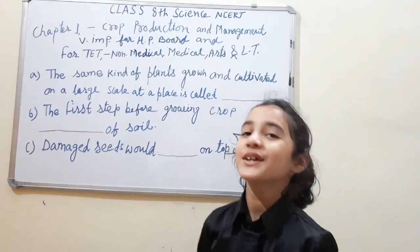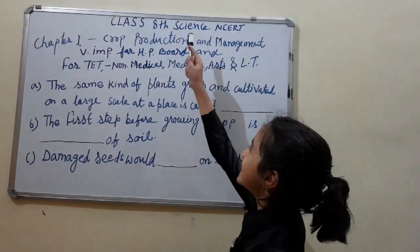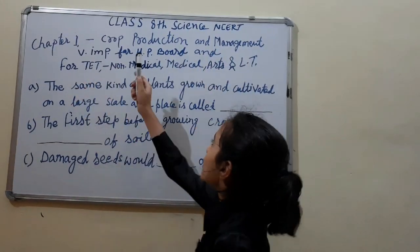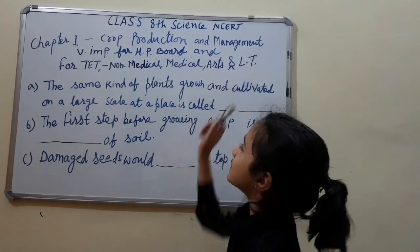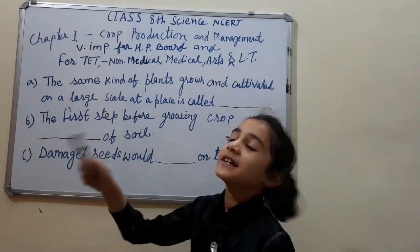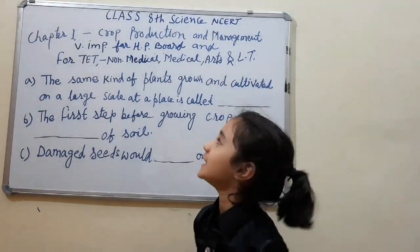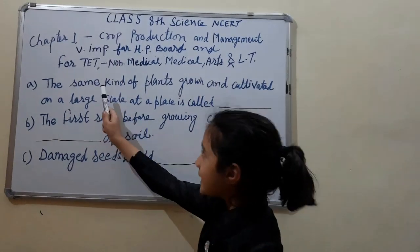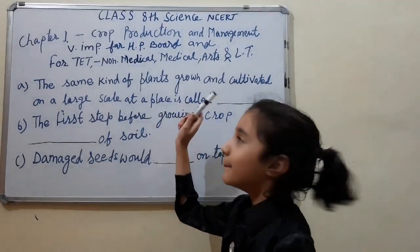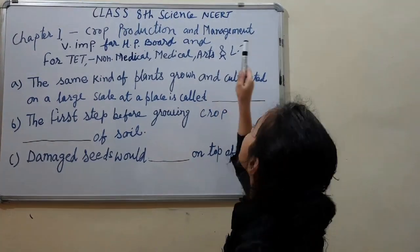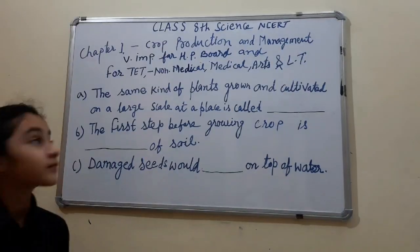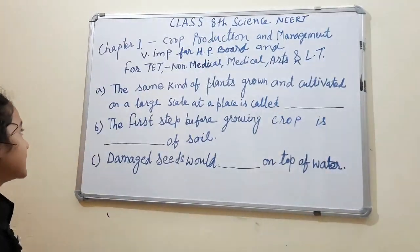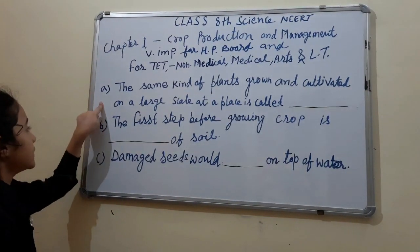Hello friends, today we are going to do Class 8 NCERT Science, Chapter number 1: Crop Production and Management. This chapter is very important for HP board and for tech — non-medical, medical, arts, and LTE. Without these questions, you can't qualify the tech. Let's move on to the first question.